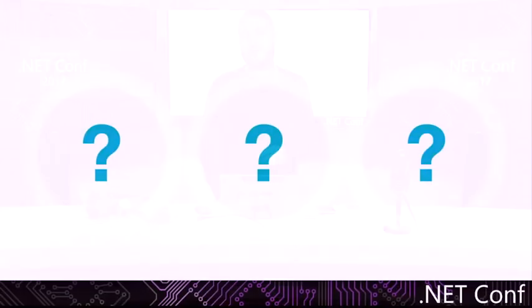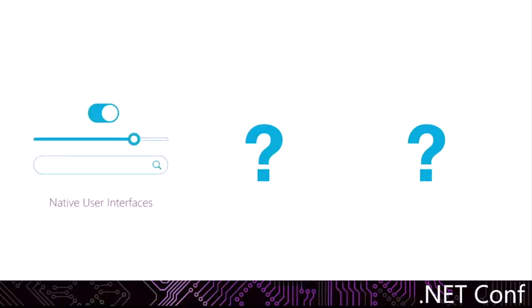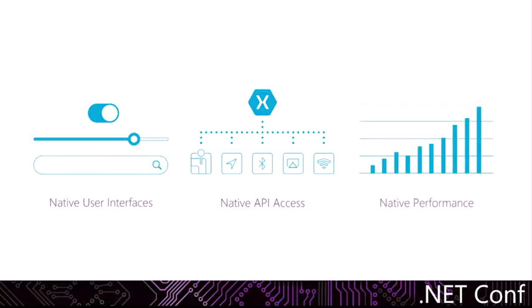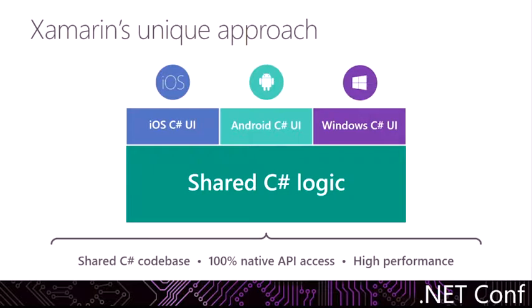To me, it's always about three things that are really important we want to deliver to our users and as developers we want to have access to. First is a great native user interface — every single UI component we should have access to on any of the platforms. As developers, we want to get access to all the great native APIs on each platform so we can distinguish our app in the app store. We want to add unique features like beacons, Bluetooth, and AirPlay, and take advantage of all those brand new features as soon as a new OS is released. And of course, we want great native performance.